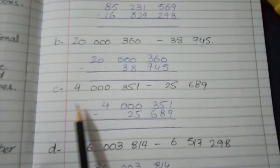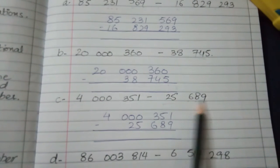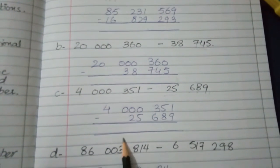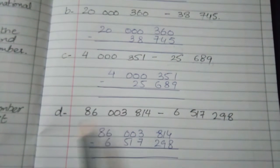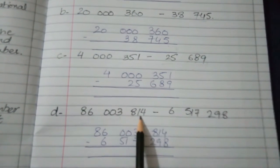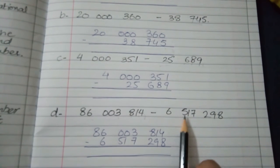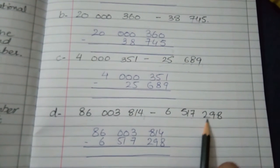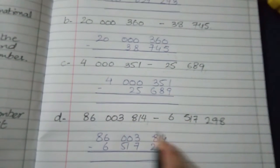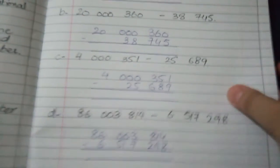Then part C: 4 million 351 minus 25,689. You will subtract these two numbers. Then part D: 86 million 3,814 minus 6 million 517,298. You will do subtraction here also.